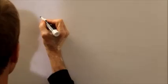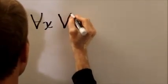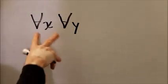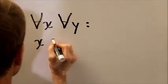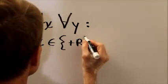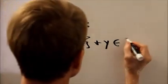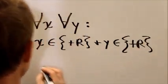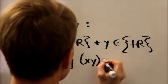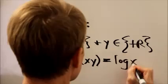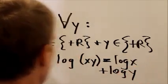So once again, here is the general formula for any two positive real numbers, x and y. You can write that, by the way, for any x and for any y. Now we're going into logic. For all x and for all y, if x is an element of the set of positive real numbers and y is an element of the set of positive real numbers, then log xy equals log x plus log y.